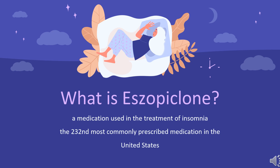Common side effects include headache, dry mouth, nausea, and dizziness. Approved for medical use in the United States in 2004, Eszopiclone is available as a generic medication. In 2020, it was the 232nd most commonly prescribed medication in the United States, with more than 1 million prescriptions.